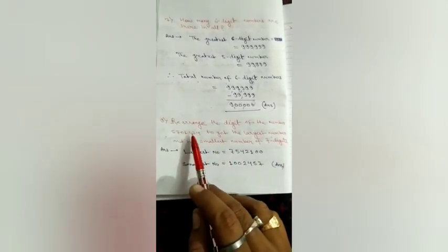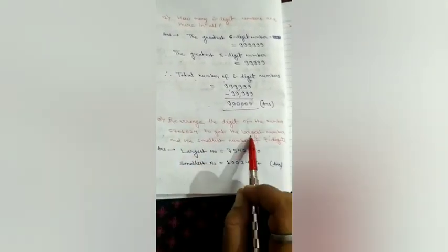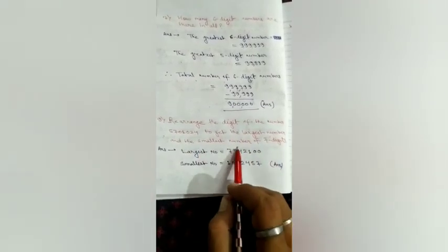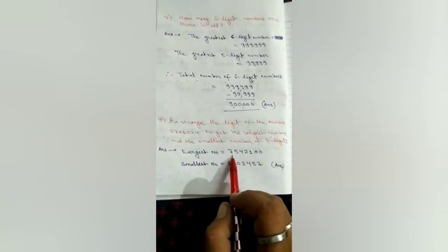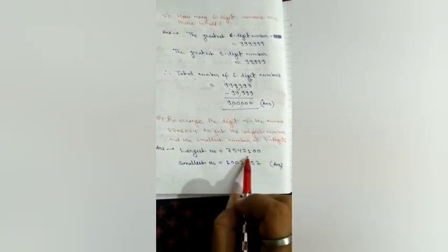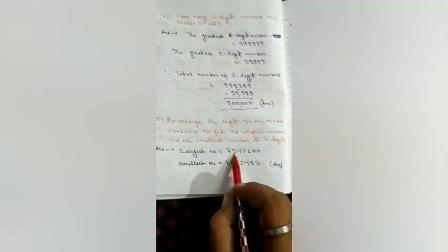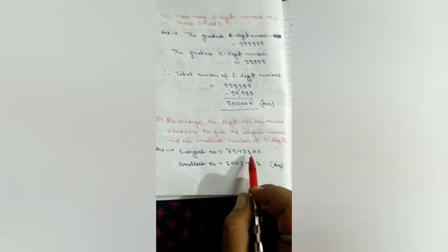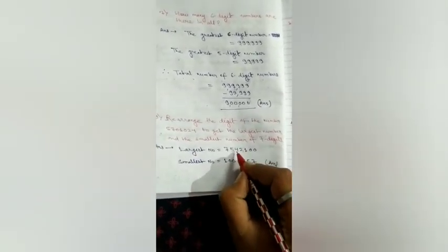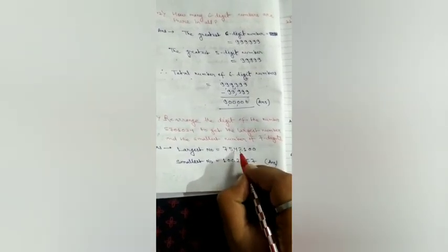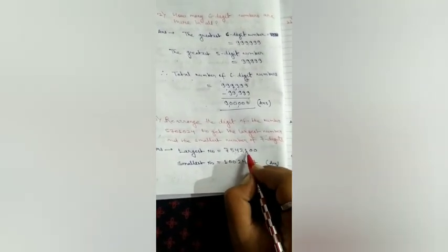Question number 9. Rearrange the digits of the number 5701024 to get the largest number and the smallest number of 7 digits. So, the largest number in this case, you have to arrange the digits in descending order. That is 7 5 4 2 1 and last you have to put the 2 zeros. That is how much? That is 75,42,100.